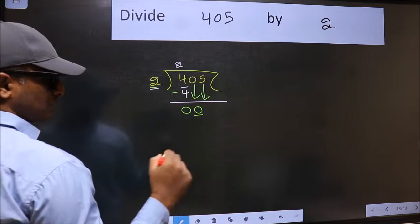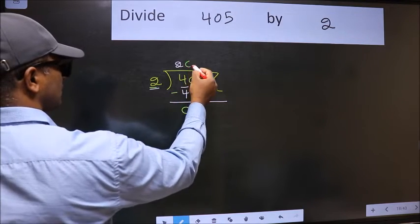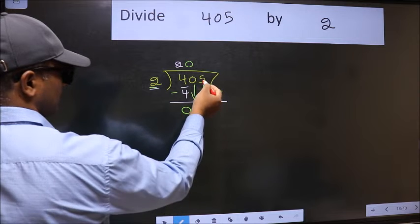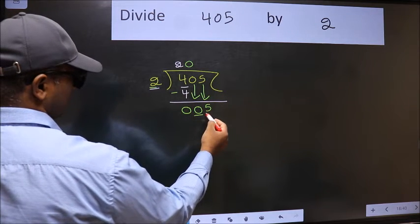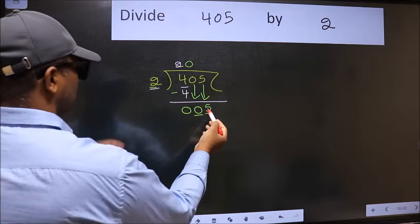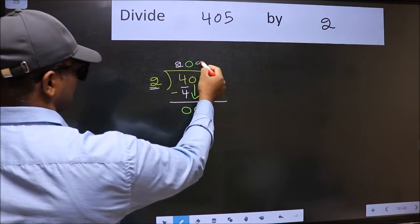And the rule to bring down the second number is we should put 0 here. Then only we can bring this number down. Now 5. A number close to 5 in 2 table is 2 times 2 is 4.